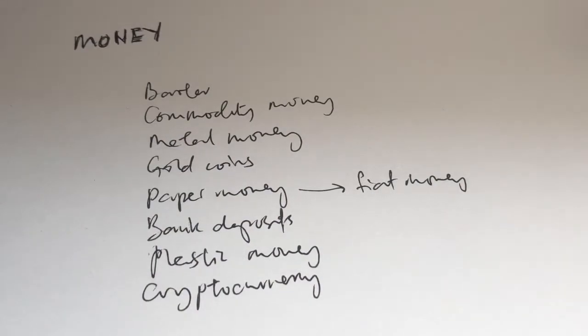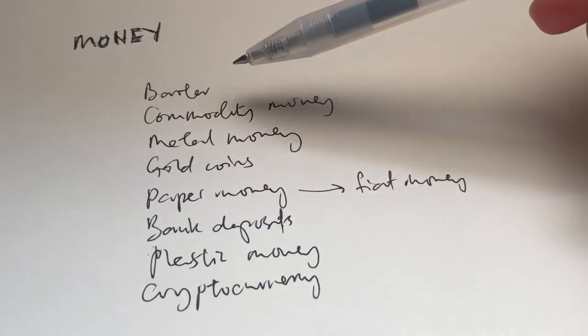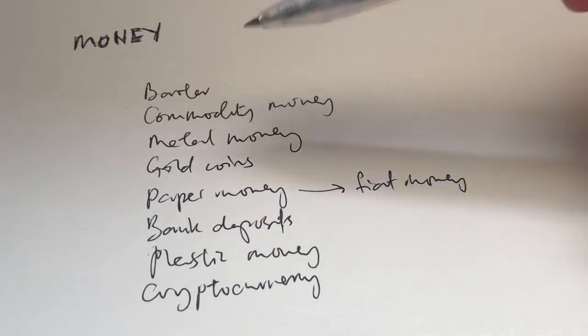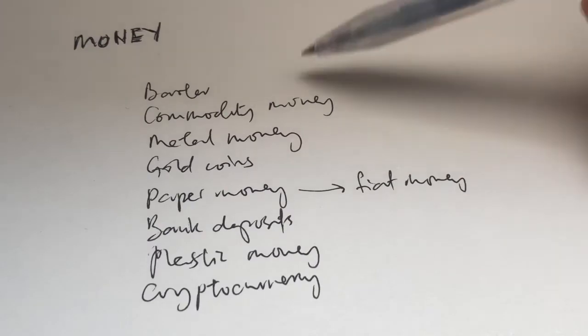Now, before money was introduced, exchange of goods and services took place by the barter system. But as we have seen in the previous video, the shortcomings of barter eventually made people realize that they need to use other things as an intermediary to make buying and selling of goods easier. So, what follows is the evolution or development of money over time.